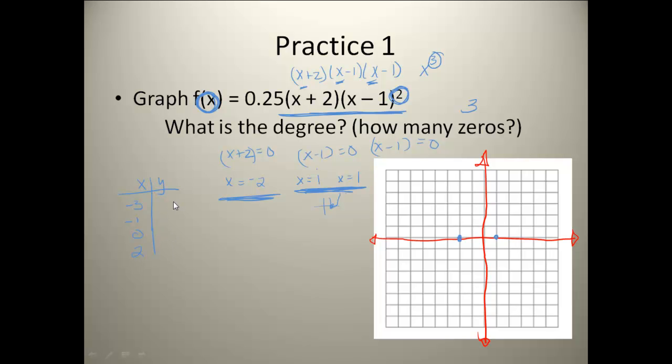Well, when I plug negative 3 back into my original equation, I get negative 4. When I plug negative 1 into my original equation, I'm going to get a 1. When I plug 0 in, I end up with 1 half. And when I plug positive 2 in, I get 1. So now I'm going to go over here and plot those points.